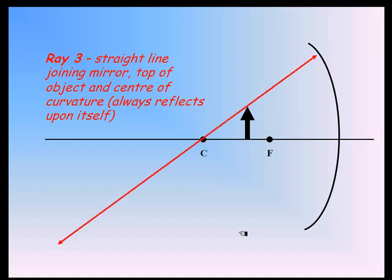It's going to intersect with that first ray we drew. The third ray that we draw, which is not entirely necessary, is through the center of curvature. It always reflects back on itself. So now we have those three rays.